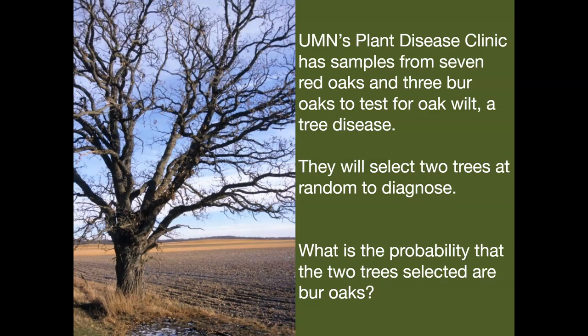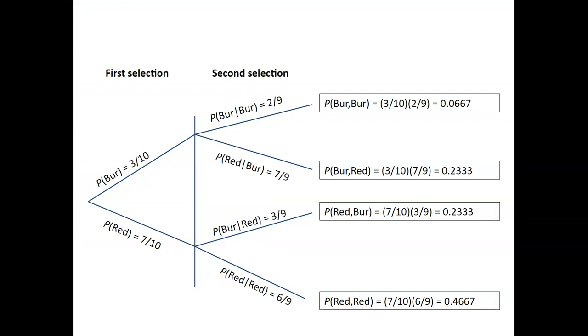We're going to step through an example now. The University of Minnesota's Plant Disease Clinic has samples from seven red oaks and three burr oaks to test for oak wilt, a tree disease. The Plant Disease Clinic does a lot of testing of oak trees for these different diseases, and homeowners and landowners might want to know what kind of disease they have. They'll send a sample in, and the Plant Disease Clinic will analyze it. The Plant Disease Clinic has these samples. They're going to select two trees at random and diagnose them. What is the probability that the two trees selected are burr oaks? This is a visual way to look at the results. Let's start with what we know. The probability of selecting a burr oak is three out of ten, or thirty percent. The probability of selecting a red oak is seven out of ten. That's the first selection that we'll take.